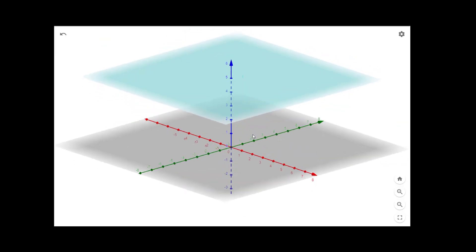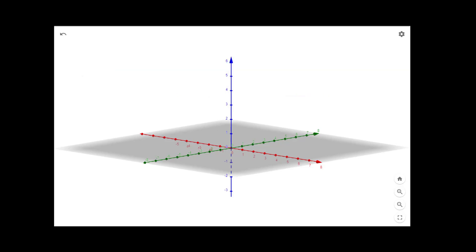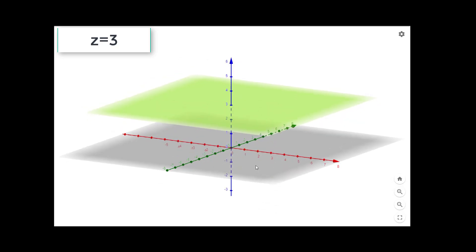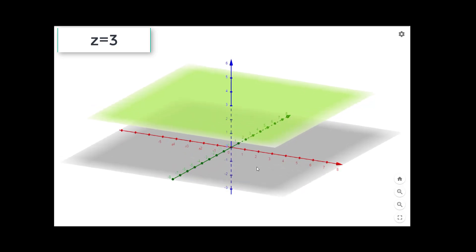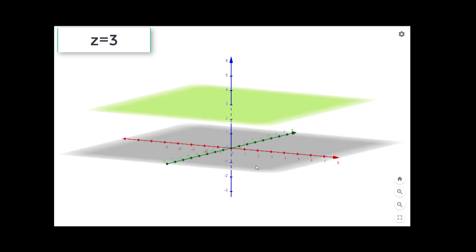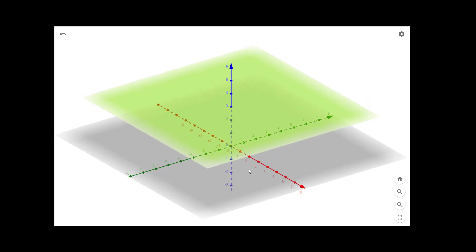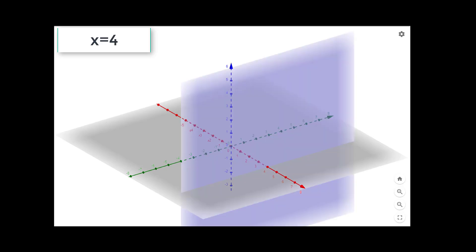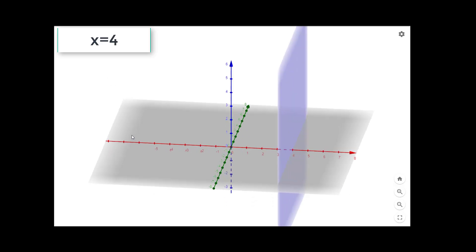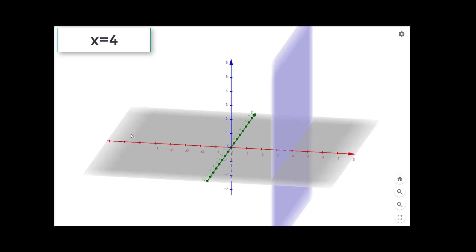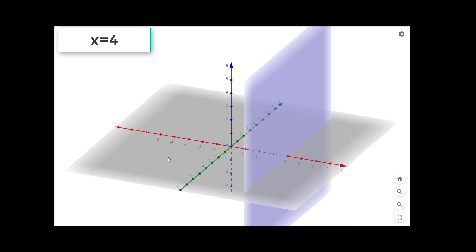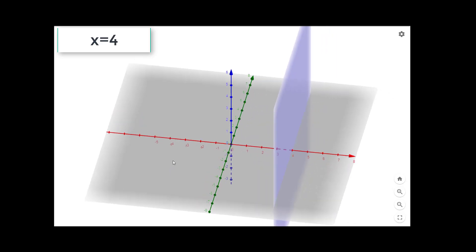So z equal to 3 is a plane which is again parallel to the xy-plane, and it is passing through the point (0, 0, 3). So its z-intercept is (0, 0, 3). This is our second plane. And our third equation was x equal to 4. So x equal to 4 will be parallel to the yz-plane. Its x-intercept is (4, 0, 0), so it will cut the x-axis at (4, 0, 0).